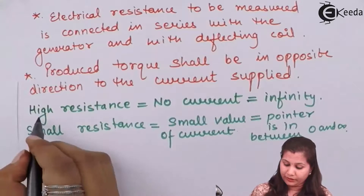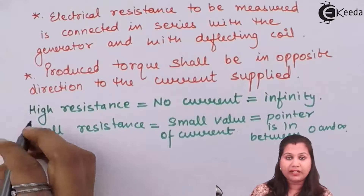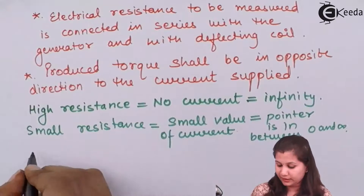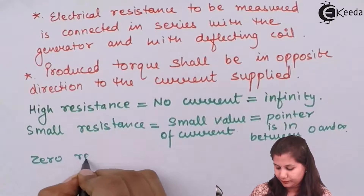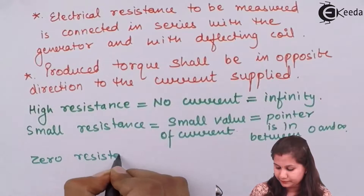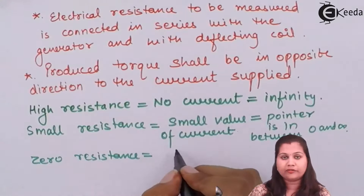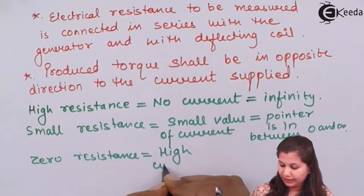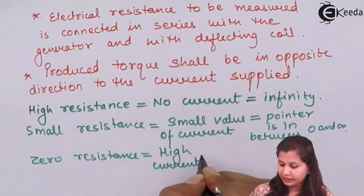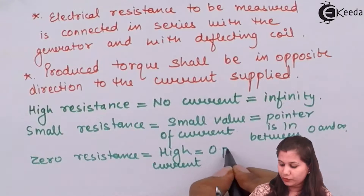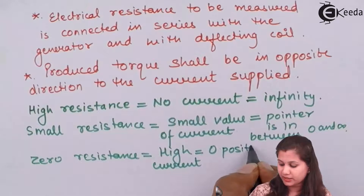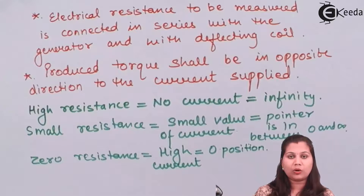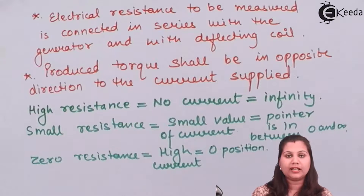When the resistance is very small — negligible or zero — the value of current will be very high, and when current is high the pointer will be at the zero position, indicating the resistance in the circuit is zero. So there are three readings according to the value of the current and the resistance.